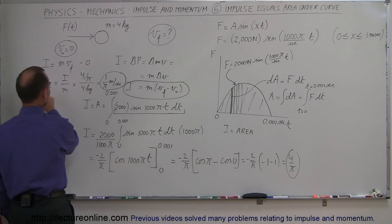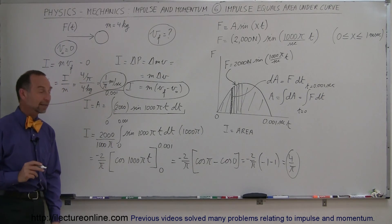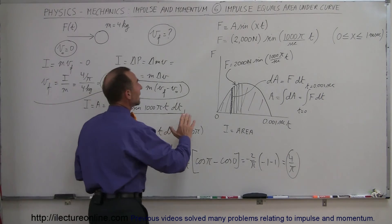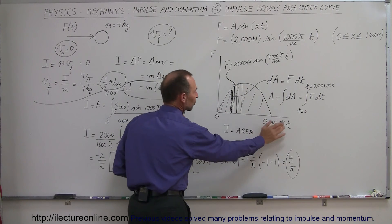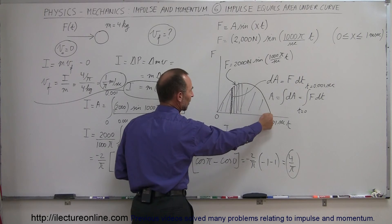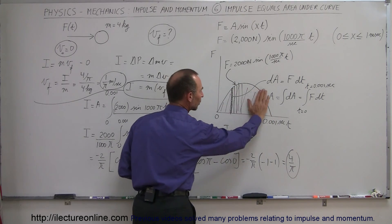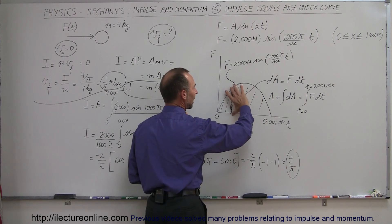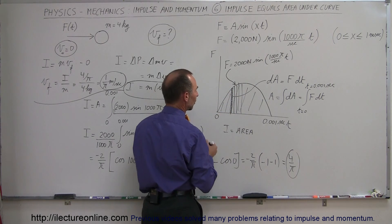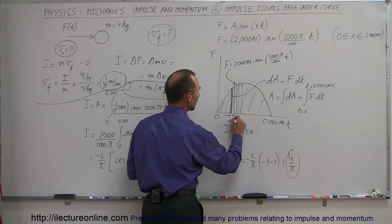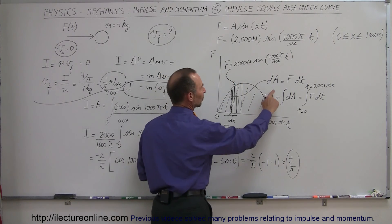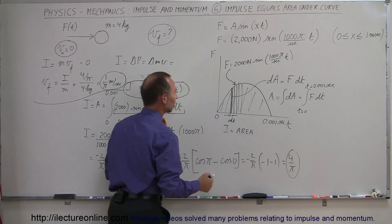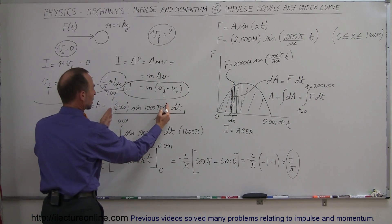To summarize: the impulse is represented as the area underneath the force function as a function of time — here represented by a portion of a sine curve. We find the area by taking a small slice dA, which equals the force — the height of the slice — times the width dt. To find the total area, we sum all slices: the integral of F dt. We plug in the force function, 2,000 times sine of 1,000 pi t, and since 2,000 is a constant it comes outside the integral.